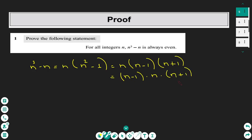By looking at this expression we see that we have a multiplication of three consecutive numbers. There are only two cases for consecutive numbers: one can be even times odd, the following odd times even.